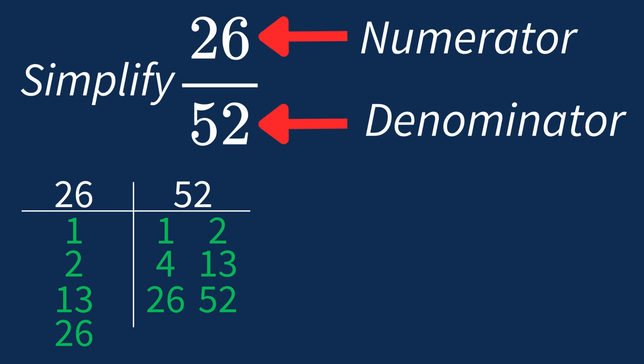So the largest common factor between 26 and 52 is 26. This means we can divide both the numerator and denominator by 26 to simplify the fraction.